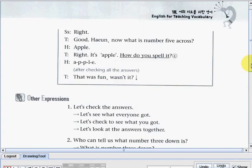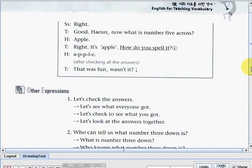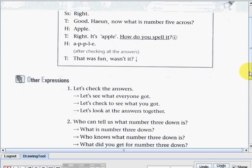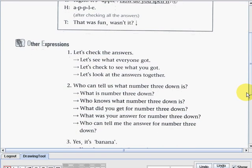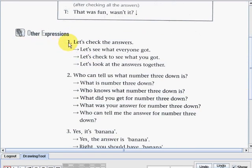All right, so now we've finished reading the dialogue part. Let us now proceed to learning the other expressions this time. So we have here the first one. The teacher said, Let's check the answers. Okay, another way of saying that is, Let's see what everyone got. Or let's check to see what you got. Okay. Or let's look at the answers together.